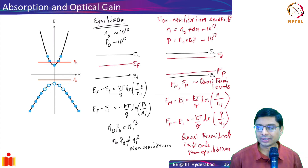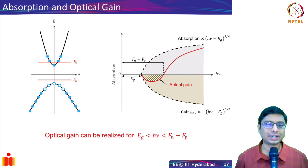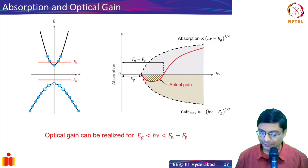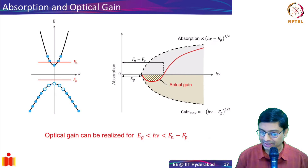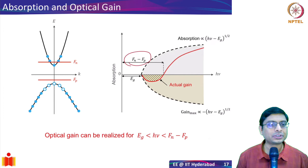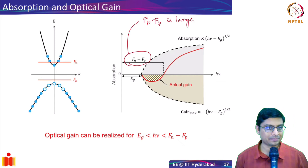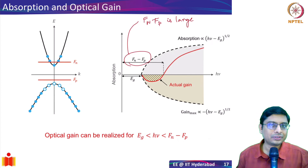Returning to the discussion on gain: if you have a material with only electrons in the valence band and nothing in the conduction band, you have absorption. The opposite gives gain. In the intermediate scenario with some electrons in the conduction band and some holes in the valence band, gain is possible over a range of energies — from the band gap up to (fn − fp). The separation fn − fp captures the degree of pumping.